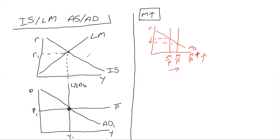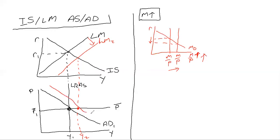Bringing this back to the IS-LM model: if our real interest rate falls due to a change in the money market, then our LM curve will shift to the right — LM2. When we shift the LM curve to the right, our aggregate demand will also shift to the right. Our output tells us where the aggregate demand curve shifts to — that is our AD2. In the short run, prices don't move; they stay at P-bar. We know that interest rates have fallen and output has risen.